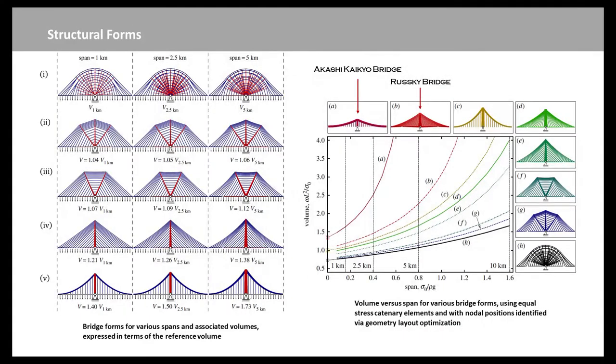The right-hand side figure shows results for all the cases described in normalized form, covering spans of up to 10 km when using the same steel material as assumed before. Volumes for the fan-style cable-stayed bridge forms are also included for comparative purposes.